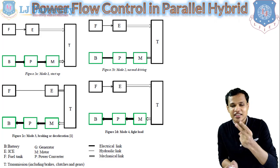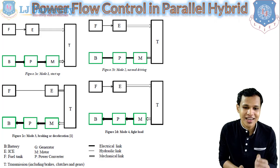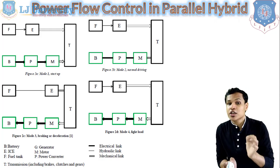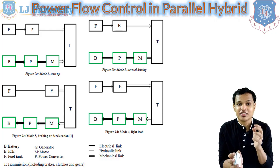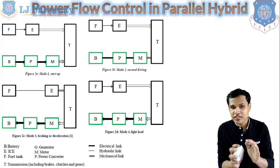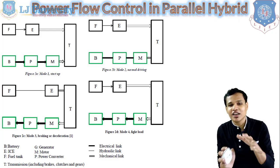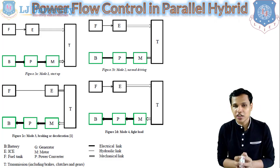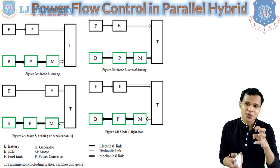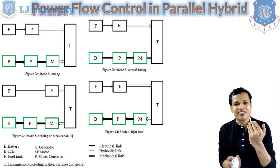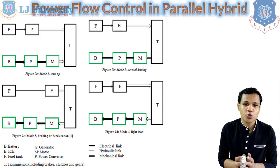In figure 2B, mode 2 is for the normal driving condition. During normal driving in the parallel hybrid system, the battery will not supply any power — only the engine will supply power to the transmission system, which is sufficient for normal driving. So only the IC engine will work when normally driving the vehicle, and the battery will not supply any power, as shown in figure 2B.